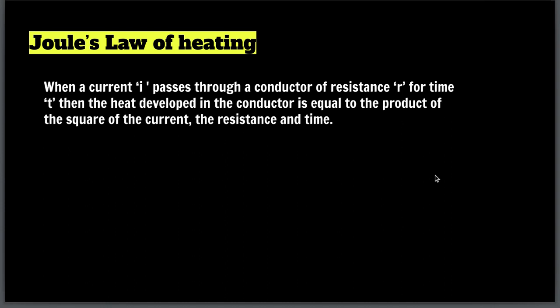There is one more method. We know that potential difference V is nothing but work upon charge, i.e., V = W/Q. Since we are talking about heat and work, we can say H = W. Now W = VQ, so H = VQ.